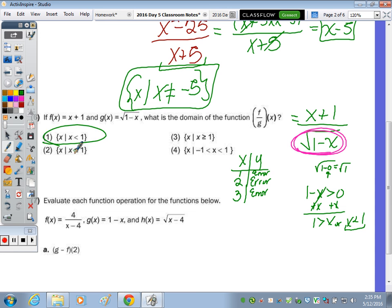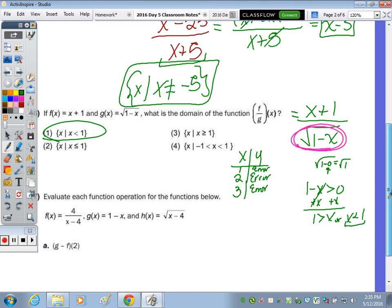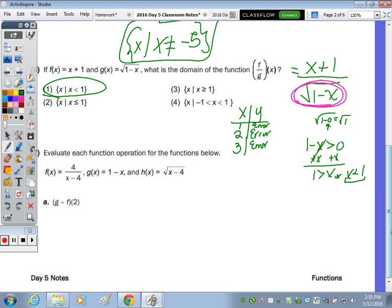Last one. Evaluate each function operation for the functions below. Actually, it's not the last one. There's some next page, right? Okay. So to do this one, what's different now, I think, based on the rest, I've lost track? Yes, is now there's a number there. So instead of having the X there, there's a number.